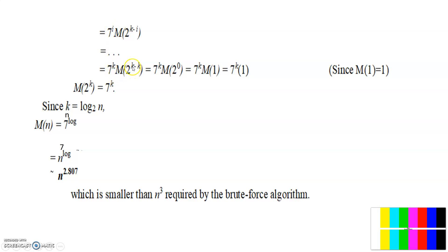If i value is k, then this value is also k. So now 7 to the power of k, M into 2 to the power of k minus k. K minus k means what? It is 0. 2 to the power of 0 means M1. So M1 value is 1 now.